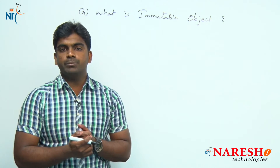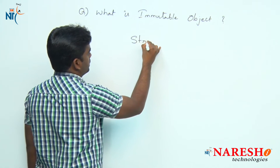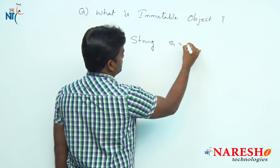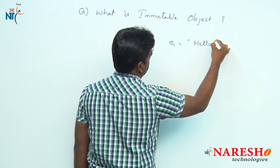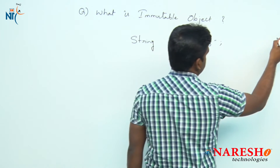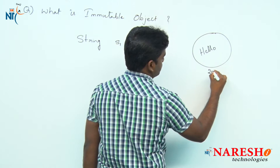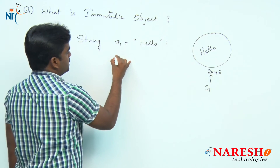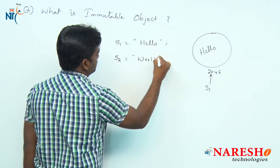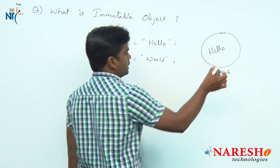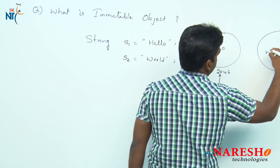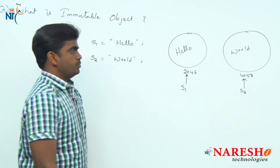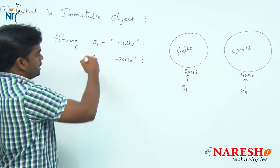One best example of an immutable object is the String class. For example, I am taking one String s1 and assigning the value 'hello' as a literal directly. A String object will be created at some memory location and s1 is pointing to it. Next, s2 is created with the value 'world', so a second object is created at another location and s2 is pointing to it.